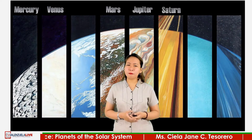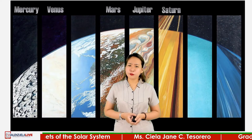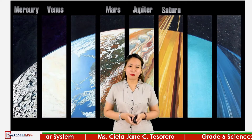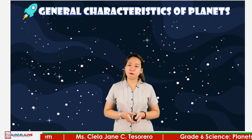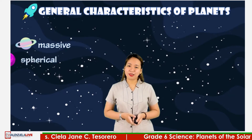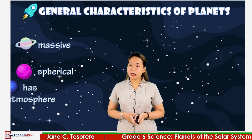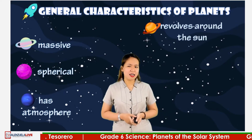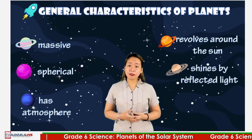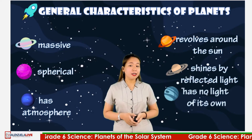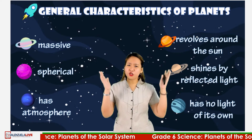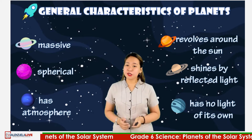Before revealing all the planets in our Solar System, let us first know how planets can be considered as planets. Here are the general characteristics of planets: first, it is massive; it is spherical; it has atmosphere; and it revolves around the sun. It shines by reflected light and has no light of its own. If a certain object has these general characteristics, it can be considered a planet.